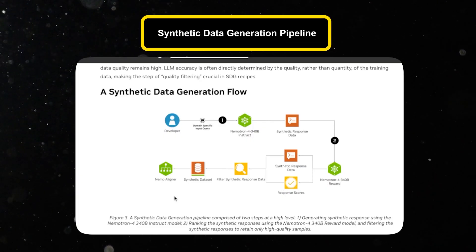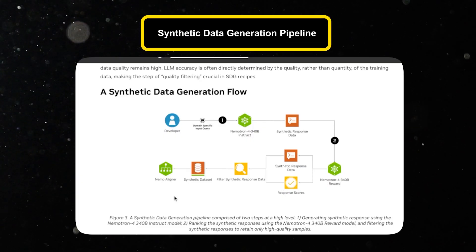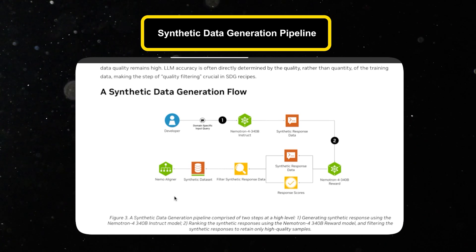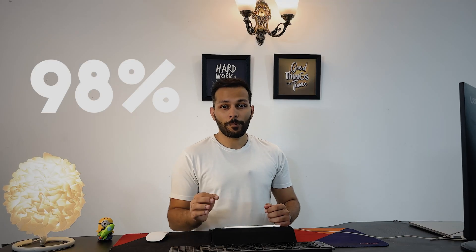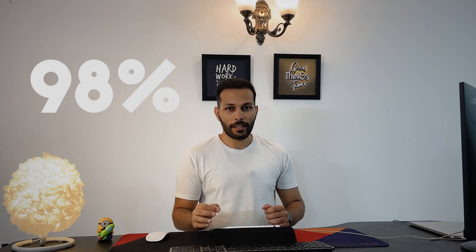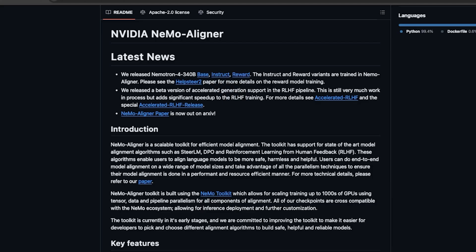Along with the three models, NVIDIA also released their synthetic data generation pipeline, using which they trained their Instruct model with 98% synthetically generated data, and also the code repository NeMo Aligner using which they trained these models. It's a big deal in the AI world where companies like OpenAI are not so open and keep their models closed under an API wrapper.